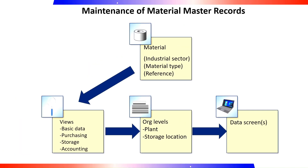Maintenance of material master records: material data is structured by user department and organizational level, and this is also evident in material master record maintenance. When processing material master records, you have to pass through several dialog screens before you start to add or change data. On the initial screen, you will see two successive dialog boxes. In the first, specify the views you want to process. In the second, specify the relevant organizational levels. Next, you will see the data screens. You can influence the default screen sequence by configuring the pre-settings.